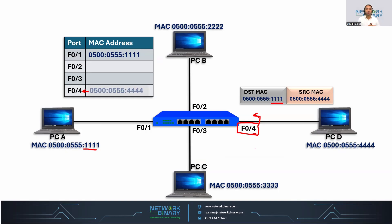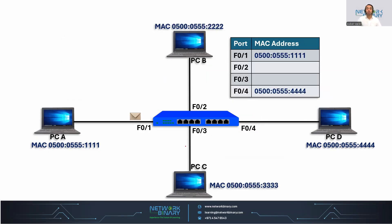The MAC address is learned. Now again, it is going to forward the frame by looking at what is the destination MAC address — which is PCA's MAC address. In order to forward the frame, it will be looking at its CAM table, and this MAC address already exists there, mapped to interface 0/1. So the switch is going to perform unicast communication as it knows where to forward the frame. Learners, the simple work of the switch: whenever it receives the frame, it learns the source MAC address inside the CAM table on the interface. And whenever it wants to switch the frame, it looks at the destination MAC address in its CAM table and performs either unknown unicast flooding or unicast communication.